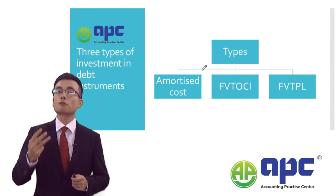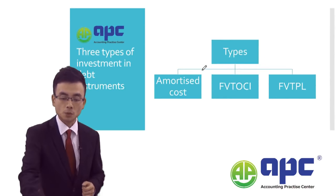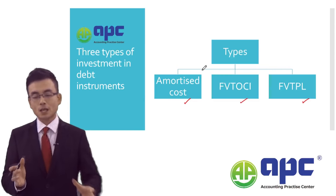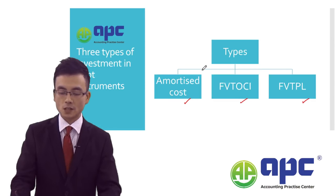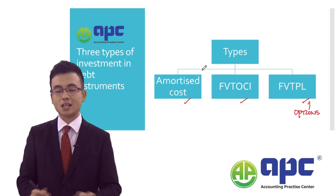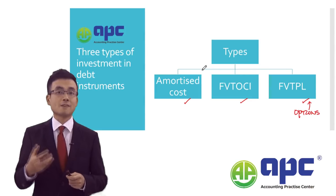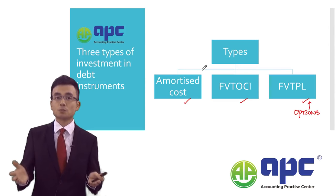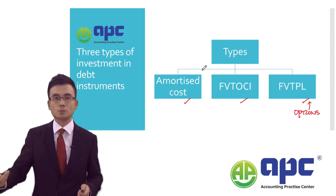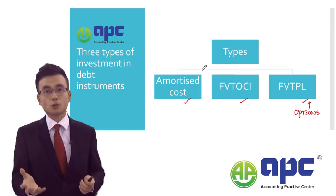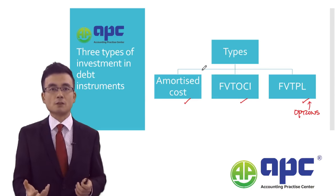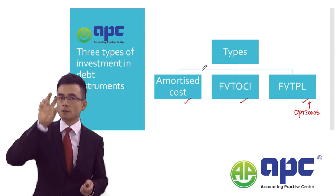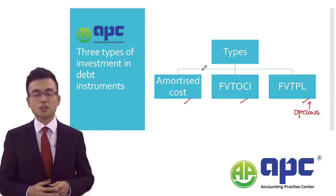So we have three types of investment in debt classification: amortized cost, fair value through OCI, and fair value through P&L. If the cash flow includes other bits and pieces — for example, an option to convert the bond into shares — we must designate the investment in debt as fair value through P&L. That means subsequently, price changes go into the P&L, because we care very much about fair value changes, and that affects our net profit in the year.